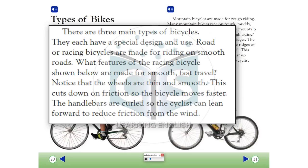Types of bikes. There are three main types of bicycles. They each have a special design and use. Road or racing bicycles are made for riding on smooth roads. What features of the racing bicycle shown below are made for smooth fast travel? Notice that the wheels are thin and smooth. This cuts down on friction, so the bicycle moves faster. The handlebars are curled, so the cyclist can lean forward to reduce friction from the wind.